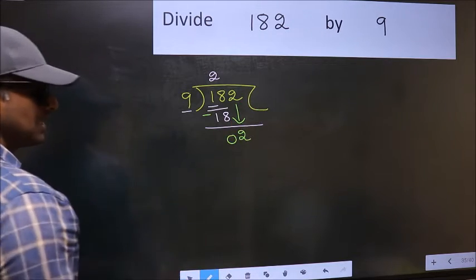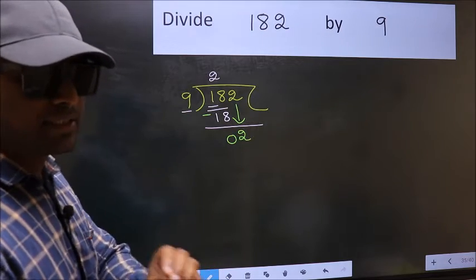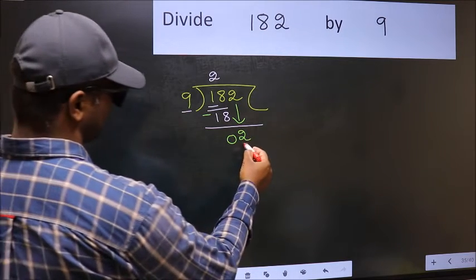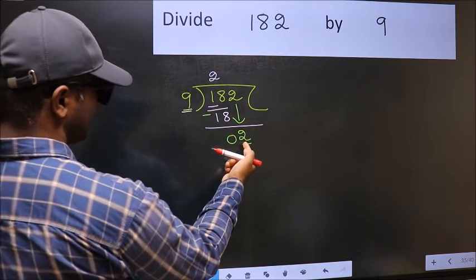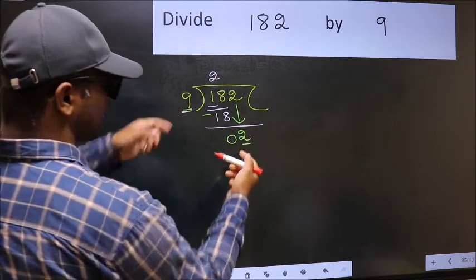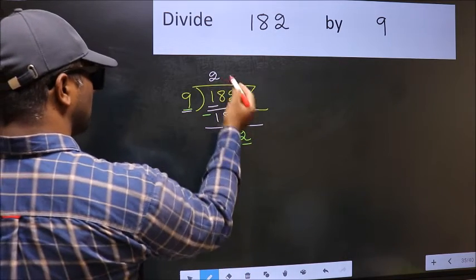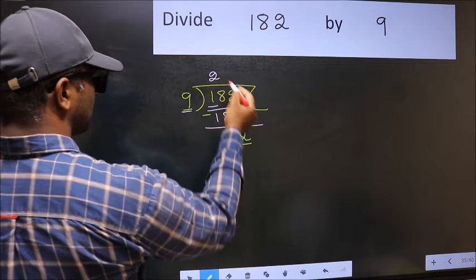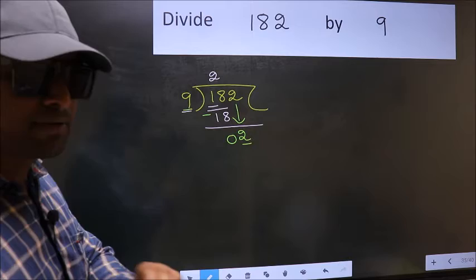After this step, the mistake happens. And the mistake is this. Here we have 2 and here 9. 2 is smaller than 9. So, what many do is, they directly put dot and take 0. Which is wrong. Why is it wrong?